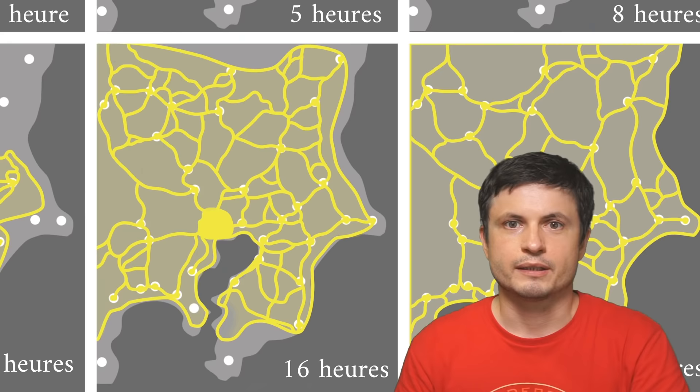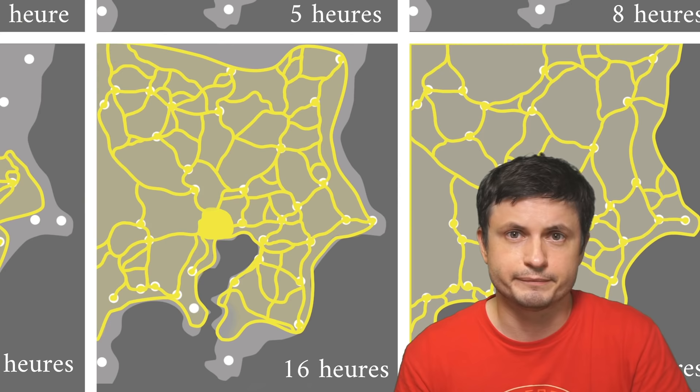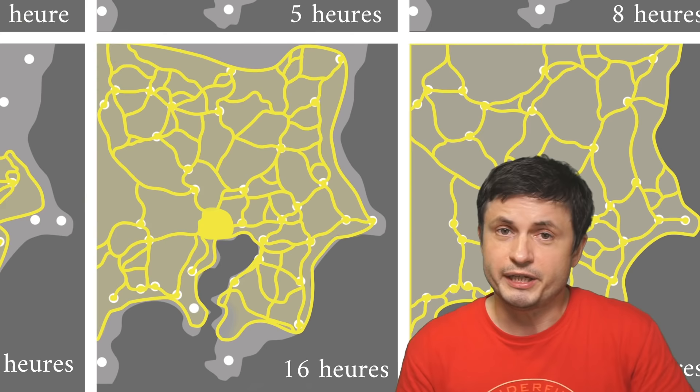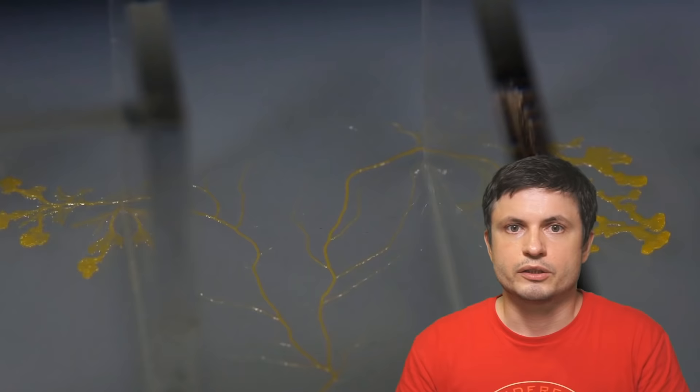And so when presented with several food sources it's able to solve the shortest path problem by creating the optimal routes to every location where the food is present. And very similar experiments have been conducted using other city maps including the maps of Spain, Portugal and United Kingdom. But it's not just able to solve these mathematical problems, it's also able to somehow remember. It seems to have memory.